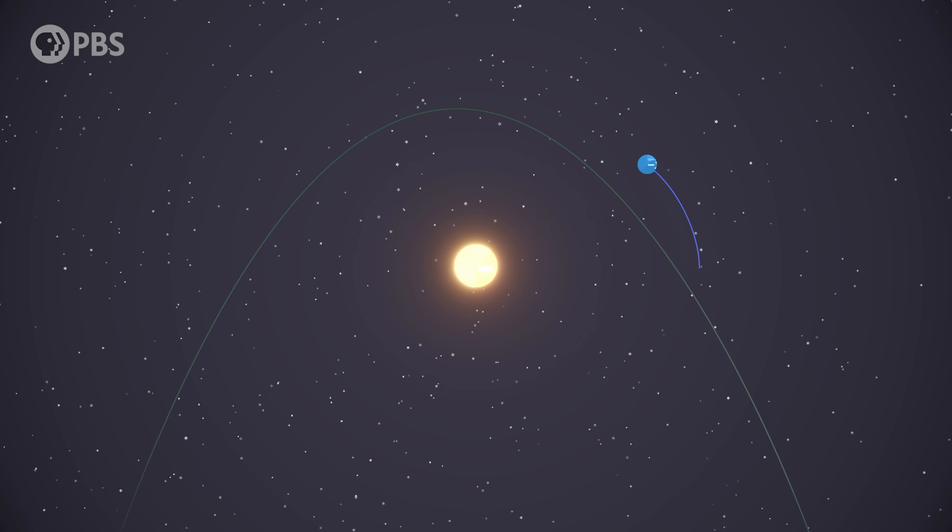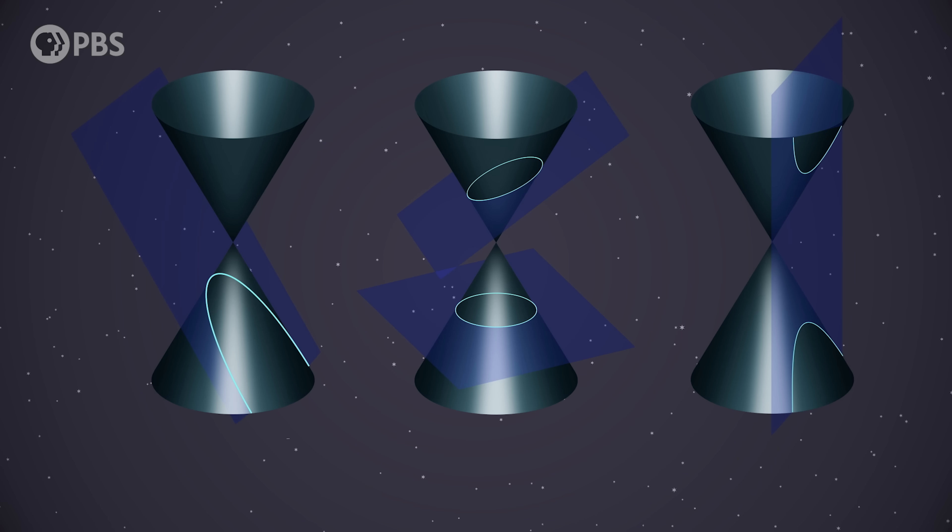In the case of two gravitating bodies, the solutions to Newton's laws are just the equations for the path traveled by the bodies, be it a parabola of a thrown ball, a circle or ellipse of a planetary orbit, or the hyperbola of an interstellar comet. In general, conic sections, the shapes you get when you slice up a cone.